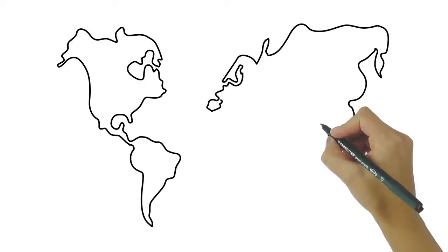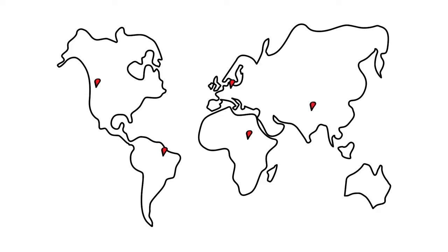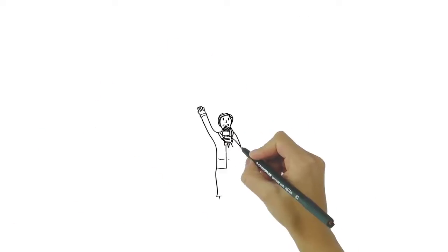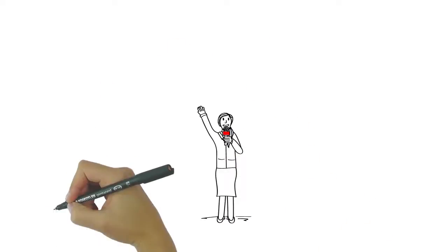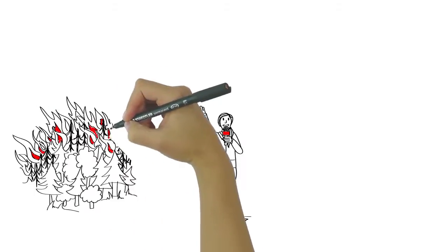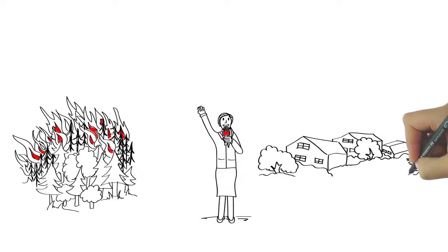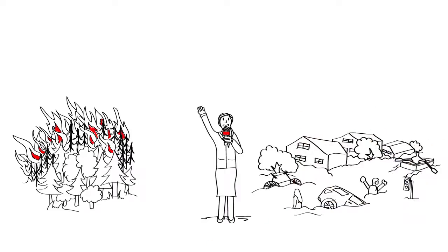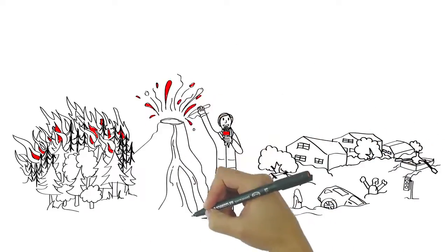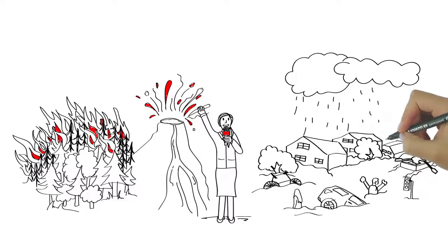Almost every week a natural disaster happens somewhere around the world. We often watch them unfold live on the news when forests go up in flames, when settlements collapse after an earthquake and roads and bridges are torn away by landslides, when volcanoes erupt or severe floods wash away our communities under torrents of water.